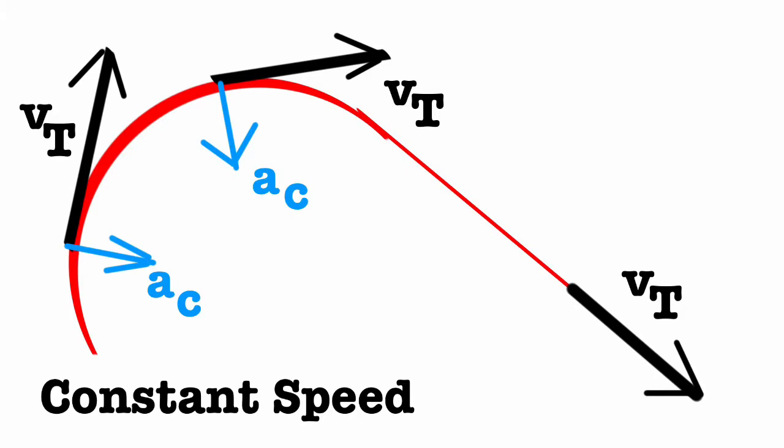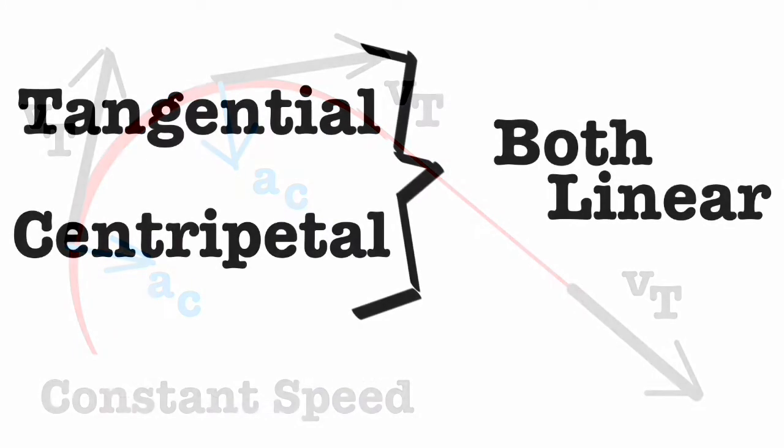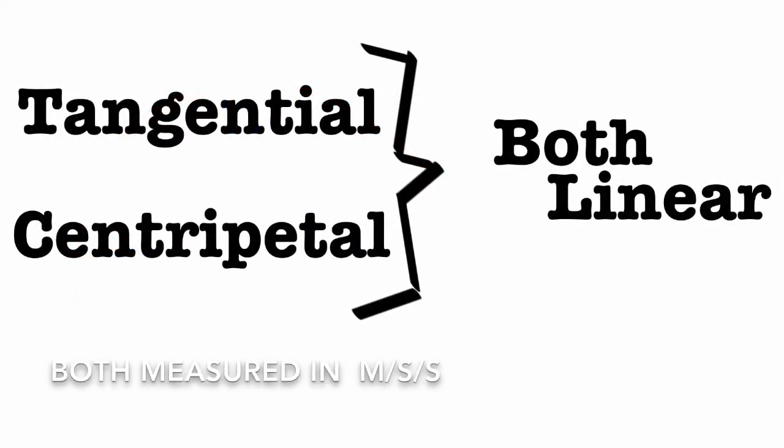That's a constant tangential speed with a changing velocity — changing direction — represented by the centripetal acceleration toward the center. Both of these values are properly linear measurements because they're both measured in meters per second squared, or meters per second every second. They're not angular or rotational.